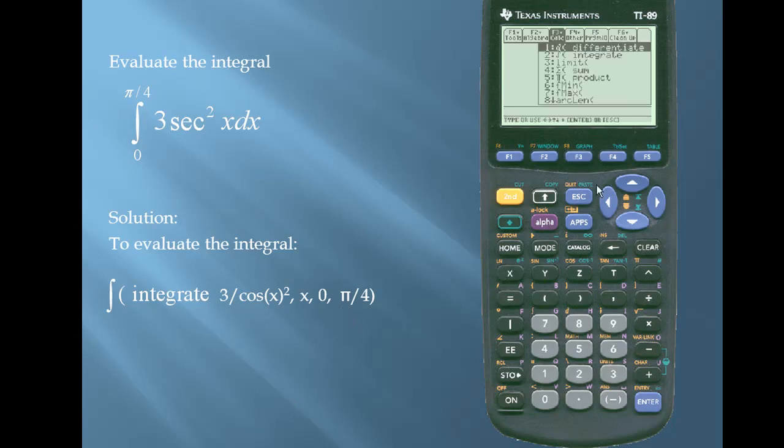So we'll press f3. We'll use the second option, which is the integrate function. We'll put in our expression 3 divided by the cosine of x. I'm going to close off my argument for cosine, and then I'll square. I'll insert a comma. Our variable is x. Our lower limit is 0. Our upper limit is pi over 4. I'll press enter, and we have a value of positive 3.